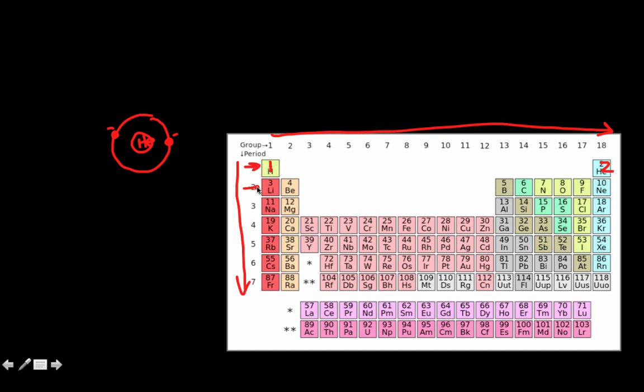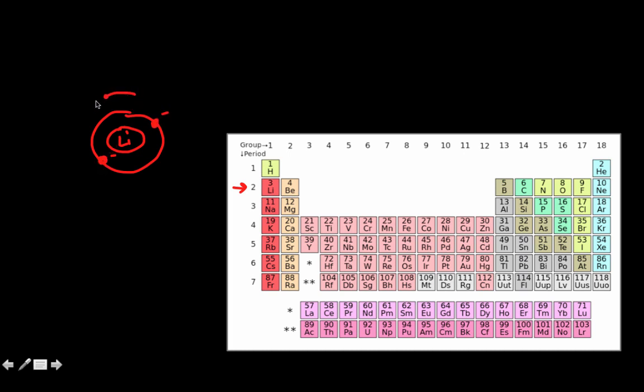If you go down to the second period, there are two energy levels. So let's try lithium. Let's draw our nucleus there. Because lithium is third on the periodic table, that first energy level would have two electrons in it. And then the next energy level would go out here, and it's the first one over, so it would have one electron.